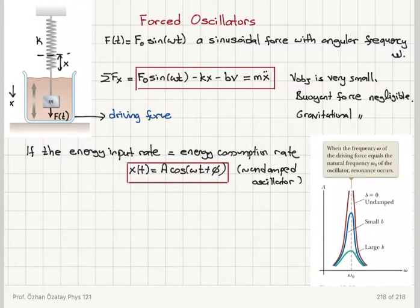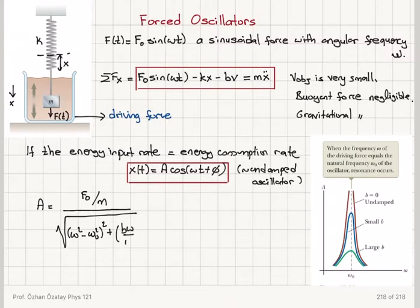There is one important difference though. The amplitude of these oscillations are given by f0 divided by m times the square root of (omega squared minus omega 0 squared) squared plus (b omega over m) squared. Remember, omega 0 is my natural frequency. It is equal to square root k over m. So this will be the amplitude of the oscillations.